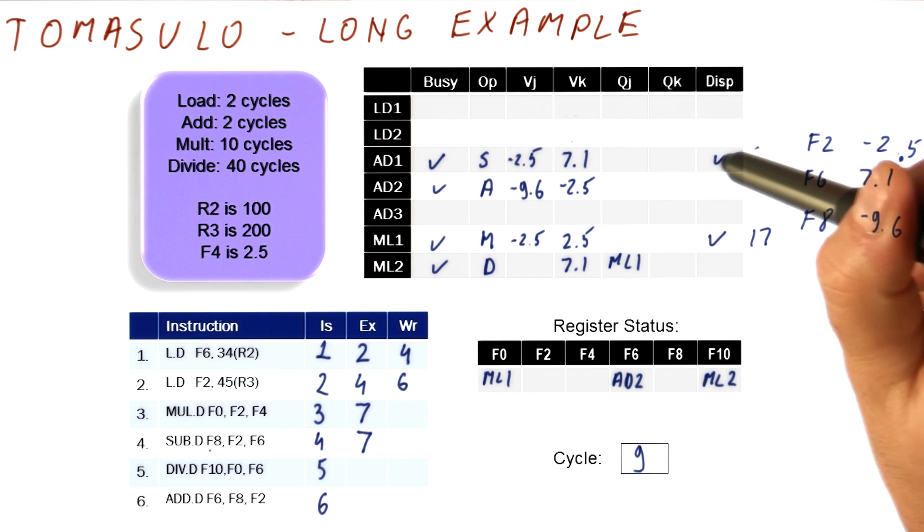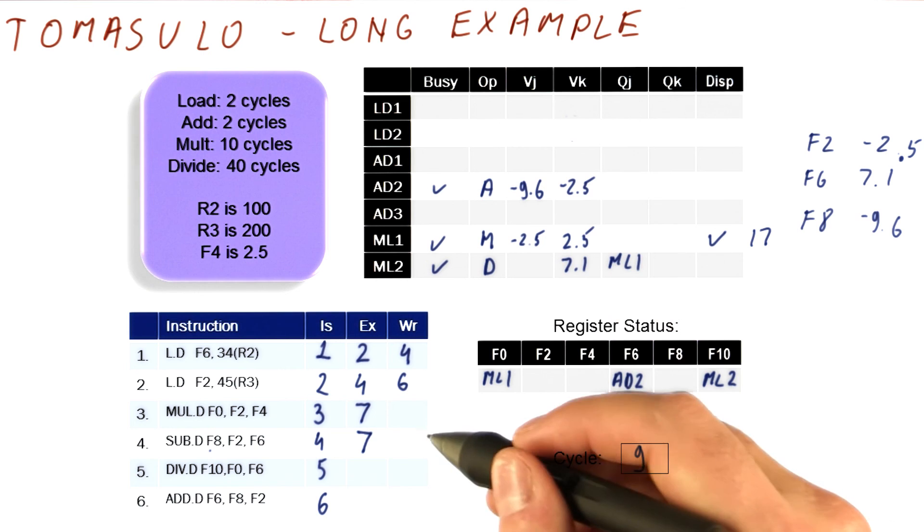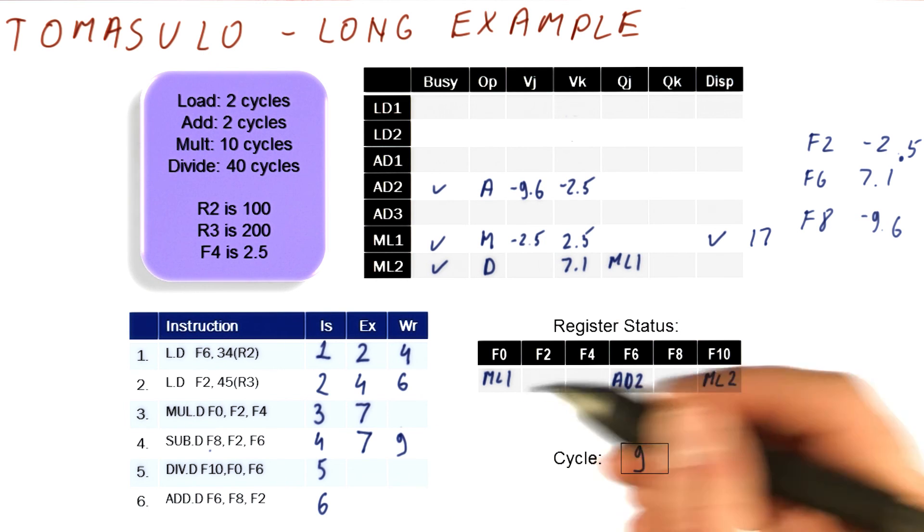And then we're going to free this reservation station, and the subtract has been writing the result in cycle 9.